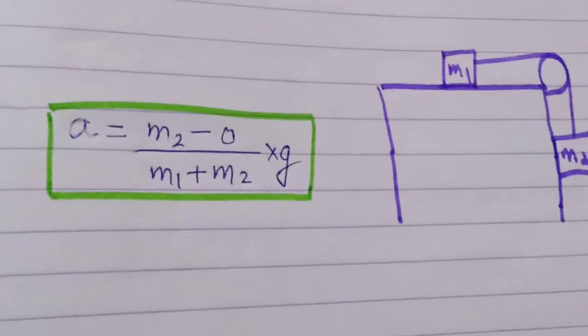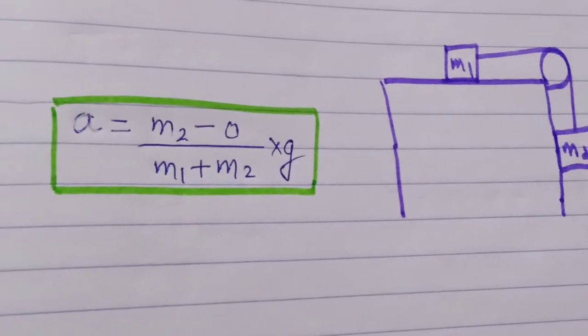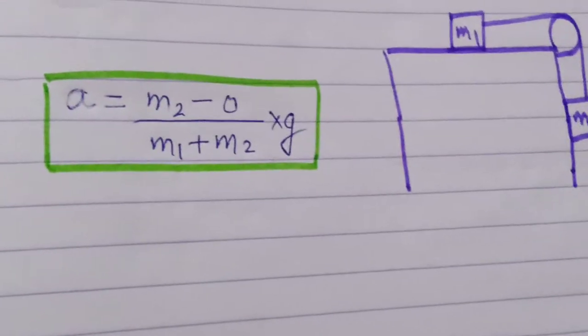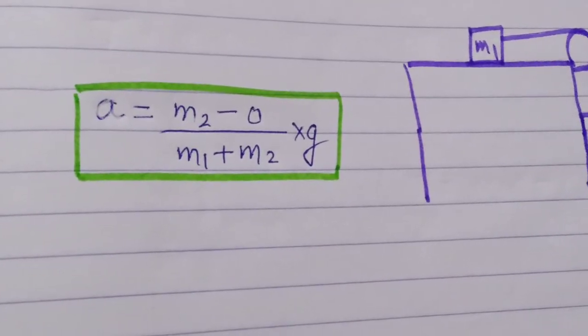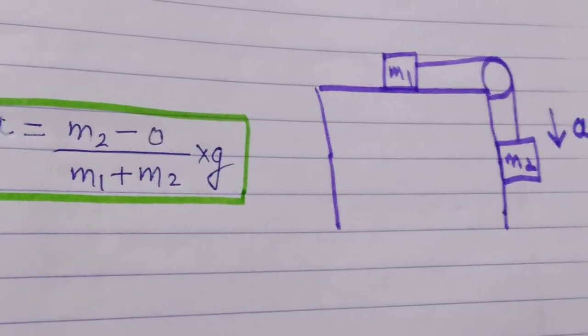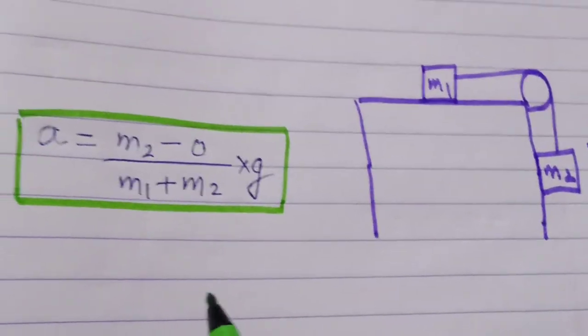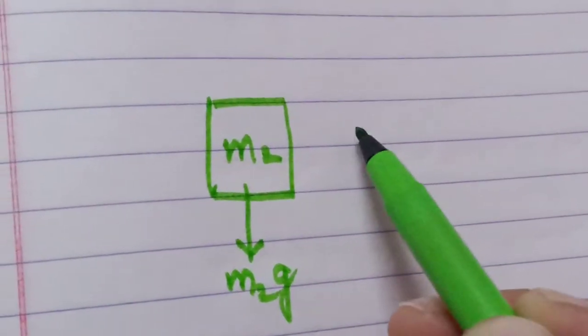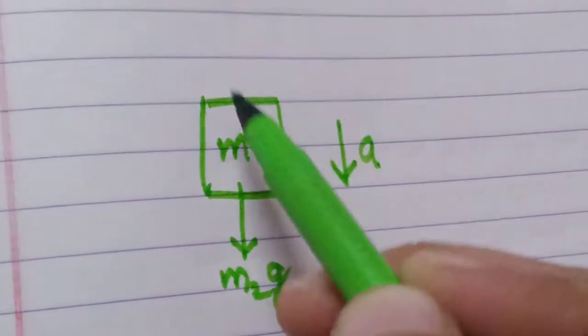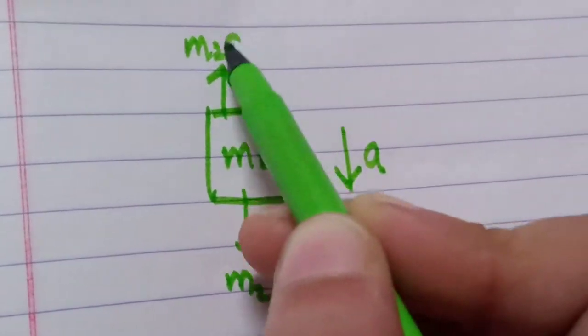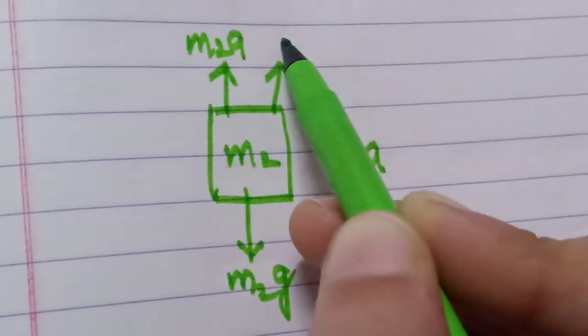Now I'll explain how it works. I'll prove it by explanation. For this condition, first we draw the FBD of m2 block. There is block m2, m2 g, acceleration downward, so m2 a and T.